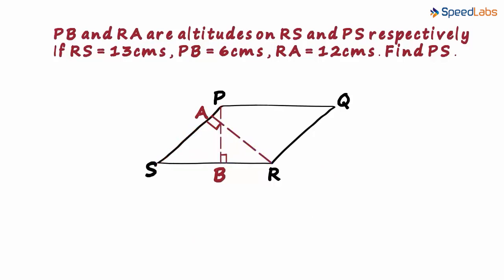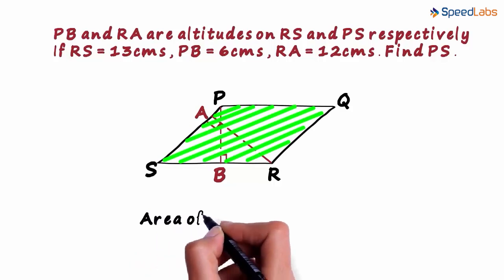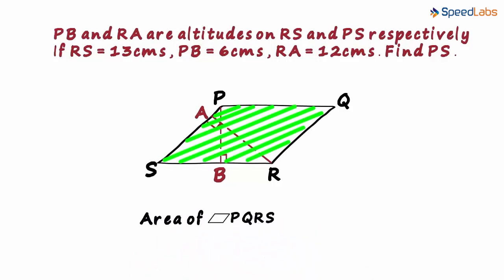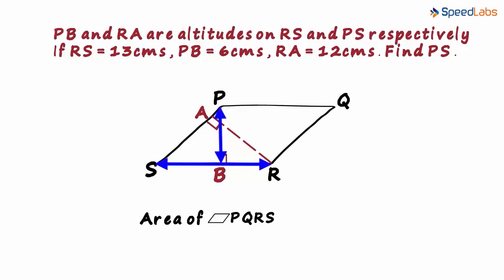First, let us find the area of the parallelogram PQRS. We have been given the values of RS and PB in the question.